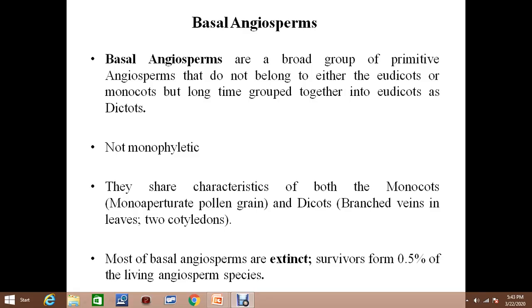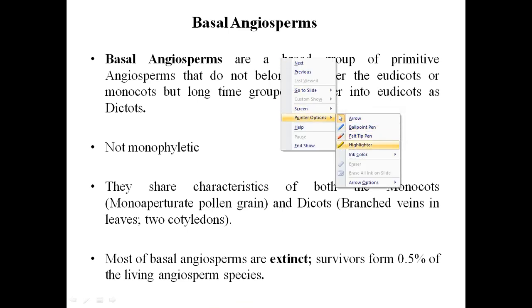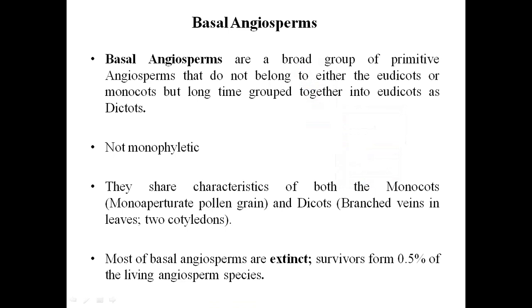I will discuss basal angiosperms. They are a broad group of primitive angiosperms. Earlier they were classified into dicots, but later they were separated and grouped as basal angiosperms. They do not belong either to dicots or monocots.